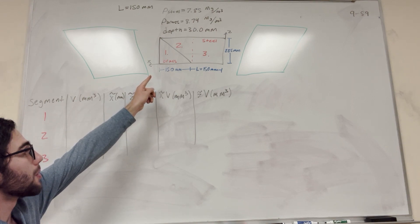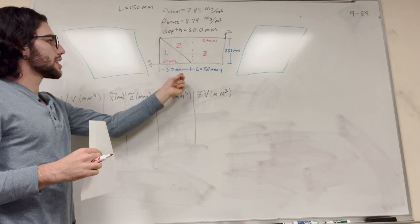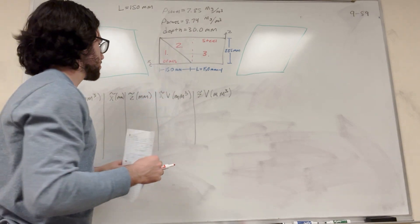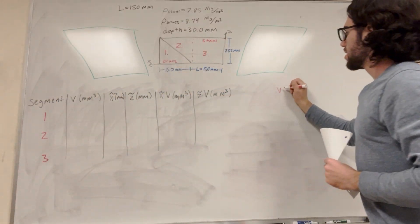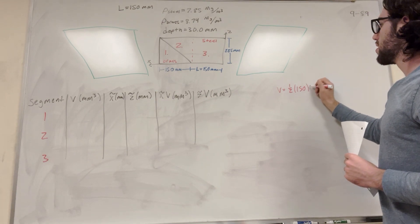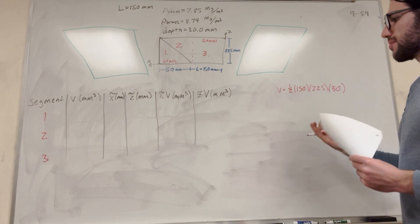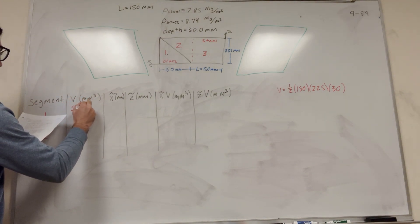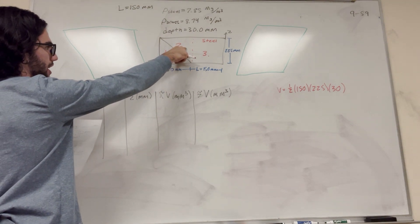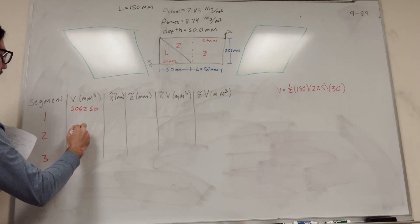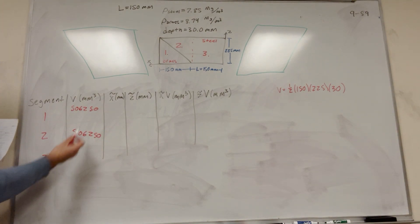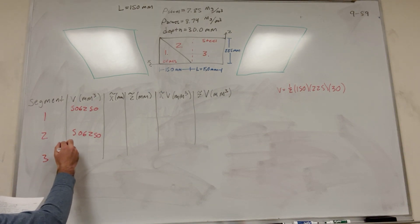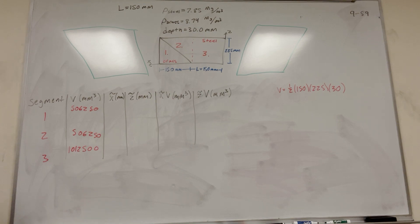We need to find the volume of these segments. For segment one, we have the triangle where x is 150 mm, y is 225 mm, and z goes back 30 mm. The volume is one-half times 150 times 225 times 30, which gives 506,250 mm³. Segment two has the same shape so it's also 506,250 mm³. Segment three is a square, equal to two of those triangles, so its volume is 1,012,500 mm³.